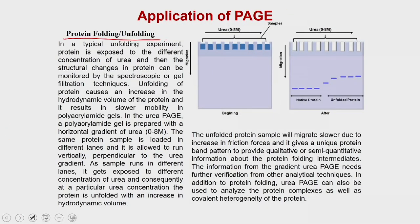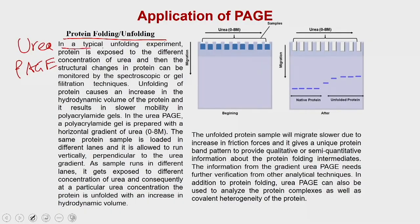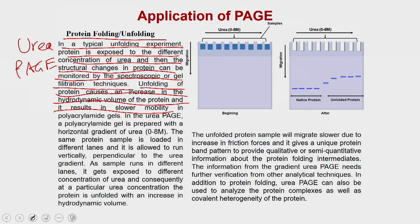Urea PAGE can be used to monitor the folding or unfolding kinetics of a protein — important for verifying that the stability of a produced protein matches what has been reported in the literature. In a typical urea gel experiment, the protein is exposed to different concentrations of urea, which interacts with amino acid residues to denature the protein. Unfolding causes an increase in hydrodynamic volume, resulting in slower mobility in polyacrylamide gels.